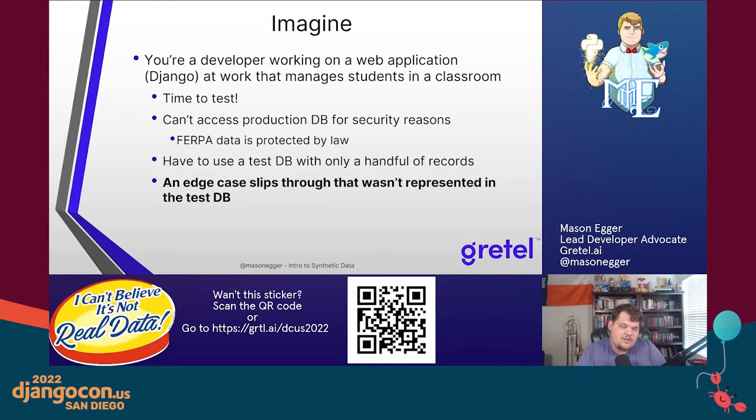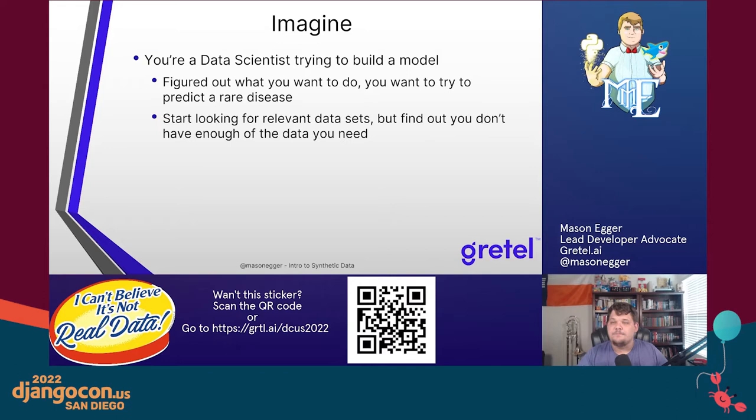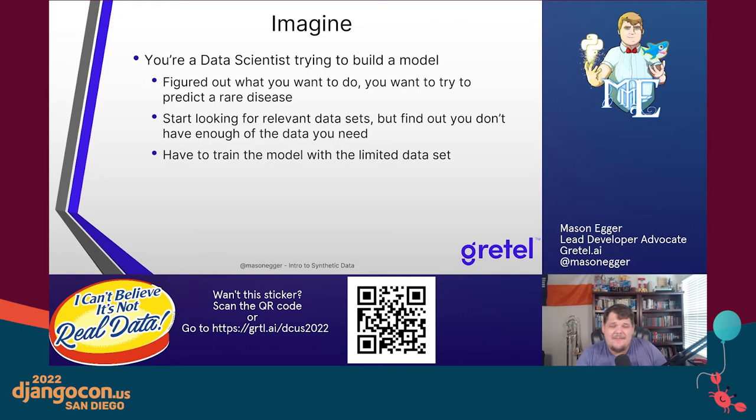Another scenario: imagine you're a data scientist trying to build a model that predicts a rare disease — maybe it's heart disease — based on parameters. You start looking for relevant data sets, you look around and find a little bit, but you really don't find a lot. There's not a good sample size, not a good representation of the data. But you still have to train this model — you've spent all this time working on it.